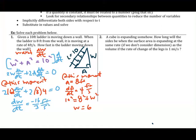Solving gives dW/dt equals negative 16 over 3 feet per second. It's negative because the ladder is moving down the wall, which makes sense. When writing the solution, you can either say the rate is negative 16/3 feet per second, or say the ladder is moving down the wall at 16/3 feet per second — just make sure the direction is indicated.